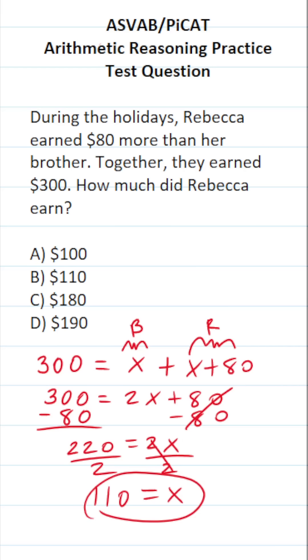We know right here, X corresponds to how much her brother earned. So we know her brother earned $110. And Rebecca earned X plus $80. We know X is 110. So this becomes 110 plus 80, which is 190.